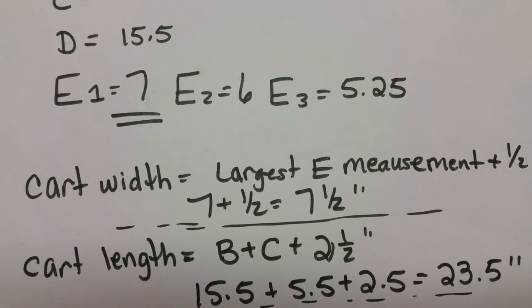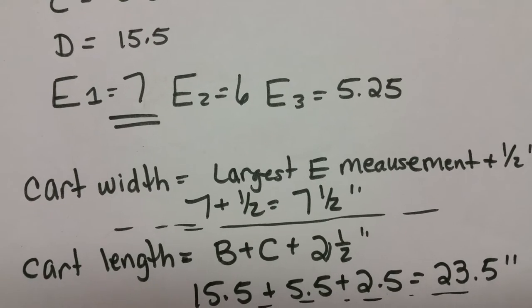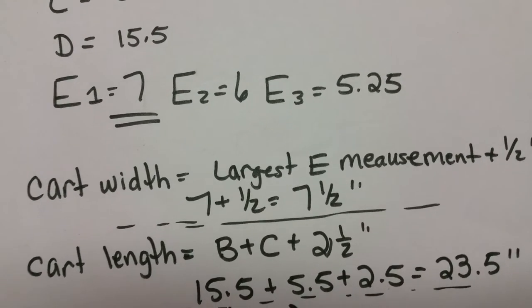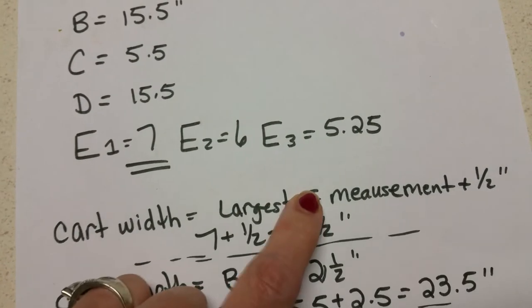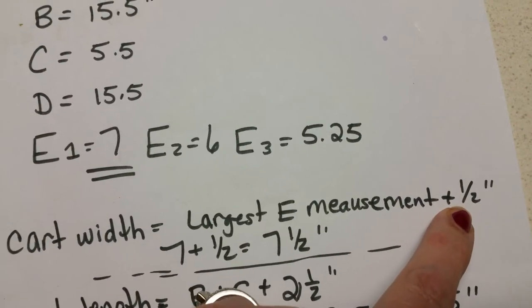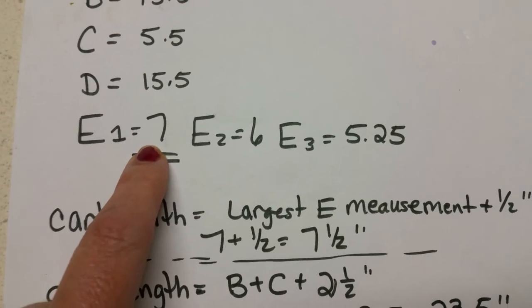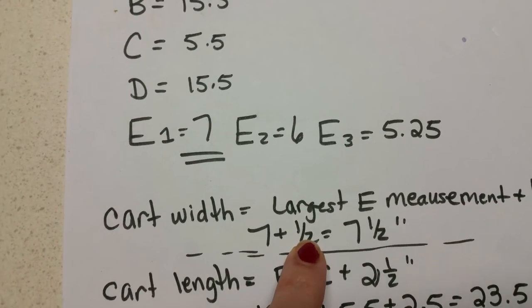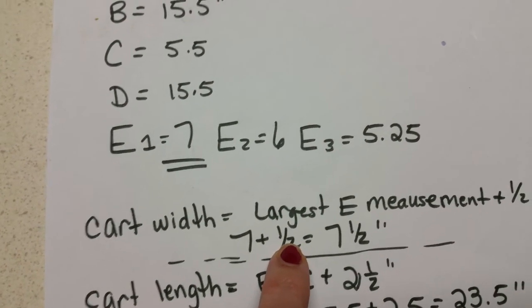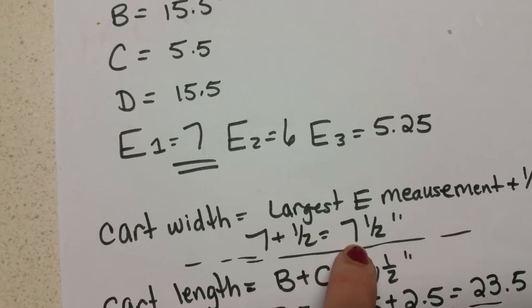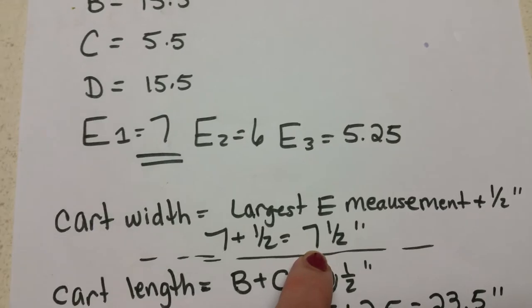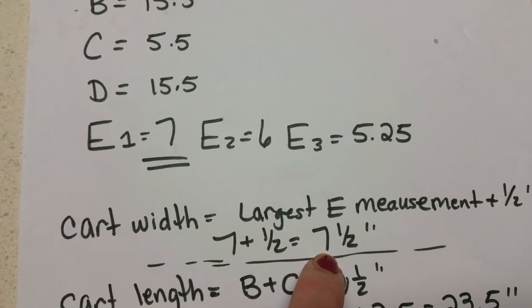Next we start figuring out the measurements we need for our cart. To figure out the cart width we take the largest E measurement and we add one half inch. So our largest E measurement was seven. We're going to add one half inch onto there because we don't want a lot of room but we want a little bit of room on each side, about a quarter inch of the dog, so that they're not smashed into their cart.